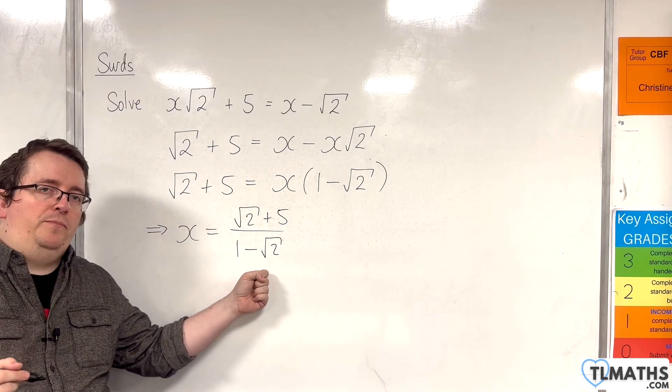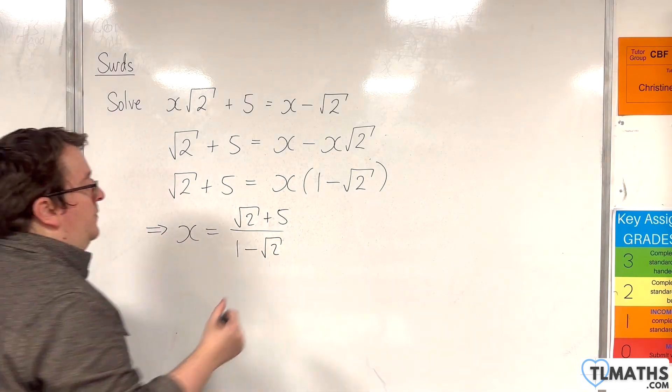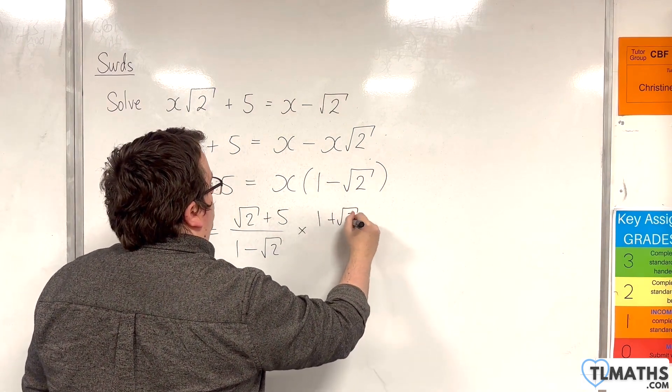With this result, I can rationalize the denominator. So I'm going to multiply top and bottom by 1 plus √2.